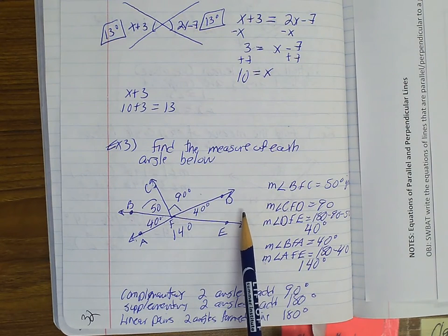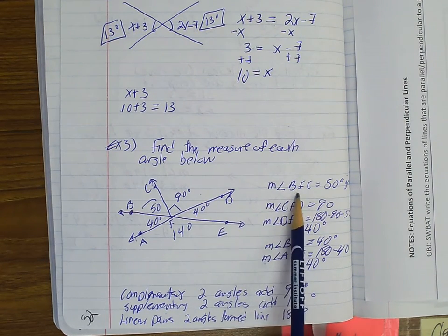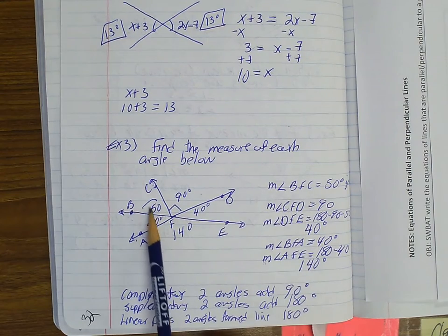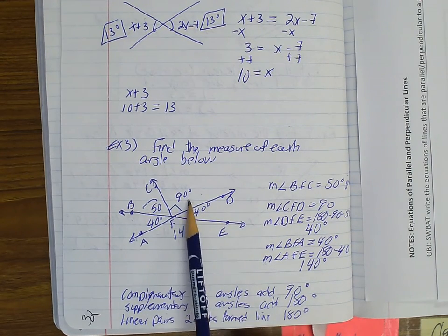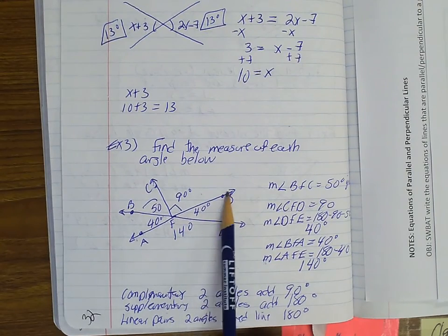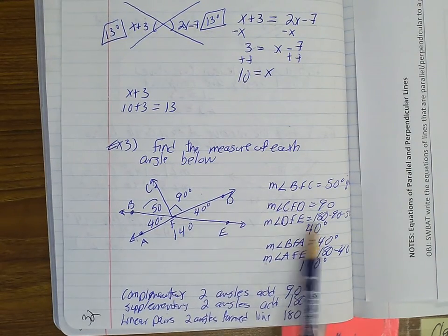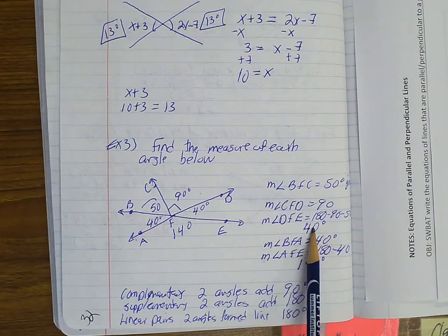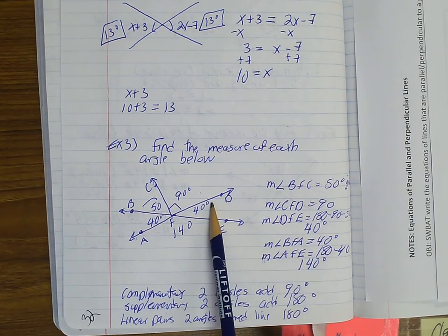So I was given m∠BFC = 50°. This one was 90° because it has the symbol here. And to get m∠DFE, I could do 180 - 90 - 50, which gave me 40.